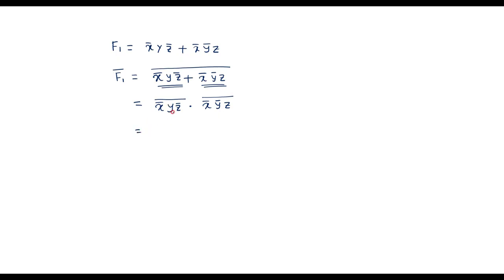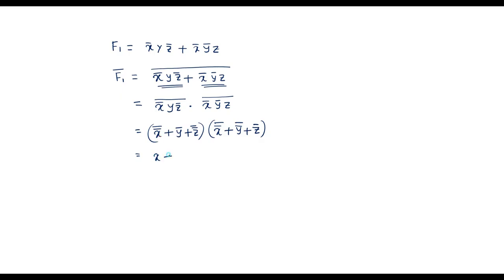Now again for each term I apply De Morgan's theorem. For the first term I can write x̄ bar plus y bar plus z̄ bar, which simplifies to x plus ȳ plus z. For the second term I can write x̄ bar plus ȳ bar plus z̄, which simplifies to x plus y plus z̄. So this is the complement of the given function f1.